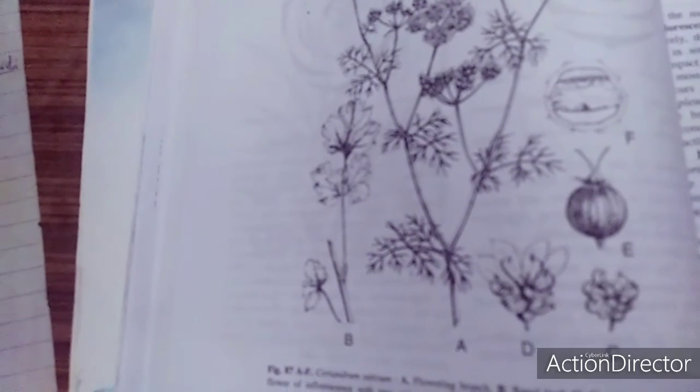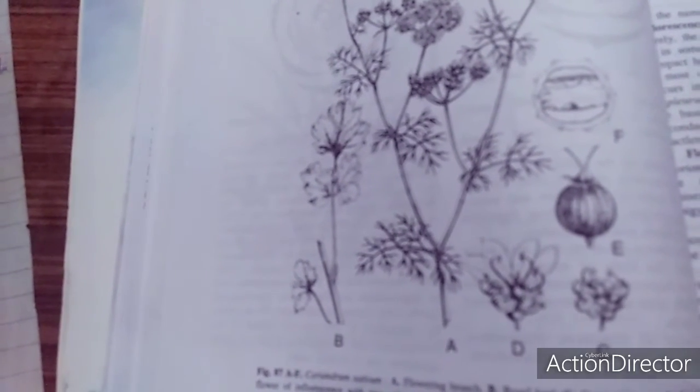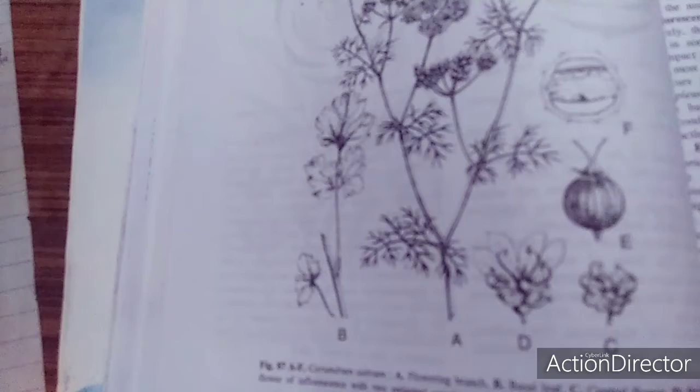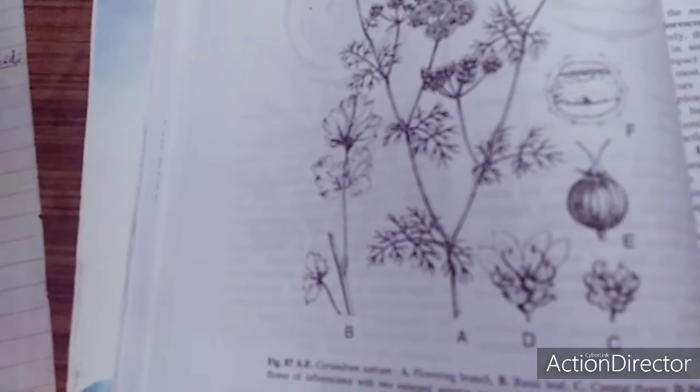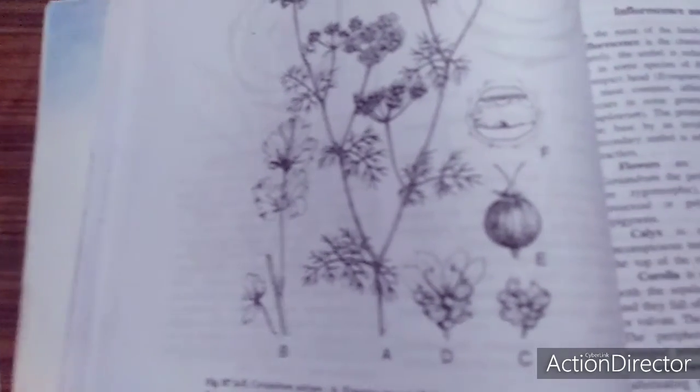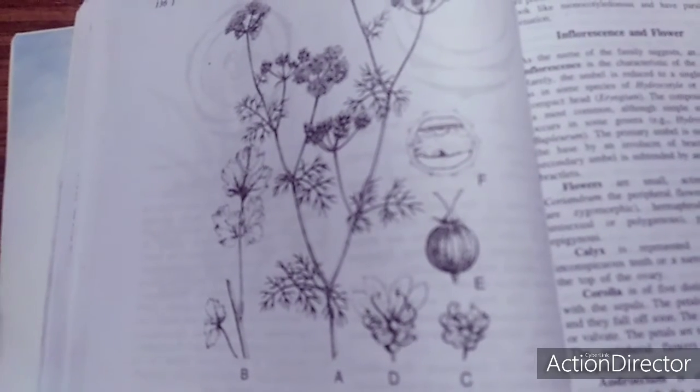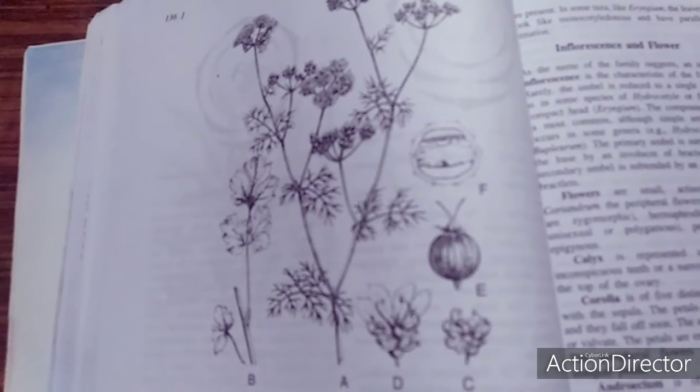Now, the Apiaceae family includes Centella asiatica (brahmi), Coriandrum, and Trachyspermum ammi, which is called ajwain, also belongs to this family. Now, let's talk about the identification features.